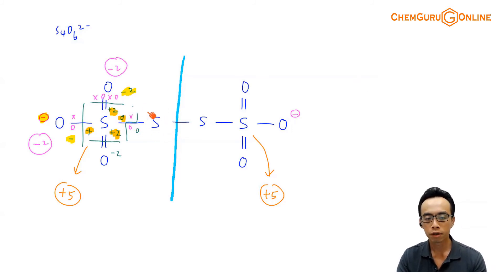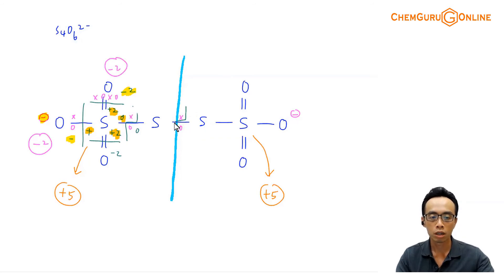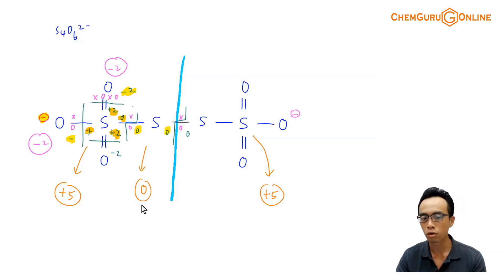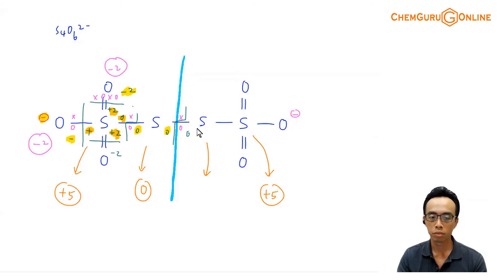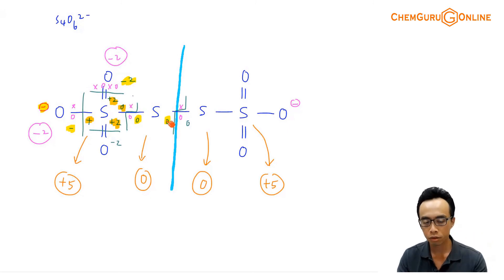Now for the inner sulfur atoms: each inner sulfur has two S–S bonds. Both are between identical elements with no electronegativity difference, so the electron pair sits at the center and breaking each bond gives 0 charge. Both contributions are 0. Total charge acquired by this inner sulfur is 0, so its oxidation state is 0. The other inner sulfur, being the mirror image, is also 0. So the actual oxidation states of the four sulfur atoms are: +5, 0, 0, +5.